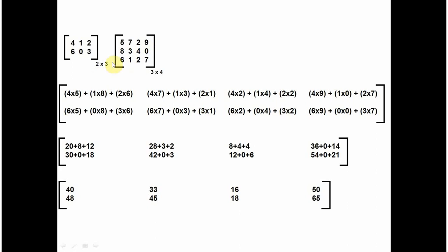The condition for matrix multiplication is that the column of the first matrix should be equal to the row of the second matrix. The multiplied resultant matrix will be of order 2 by 4. This 3 — the column of the first and the row of the second — will neutralize. So the resultant matrix will be of order 2 by 4, with 2 rows and 4 columns.